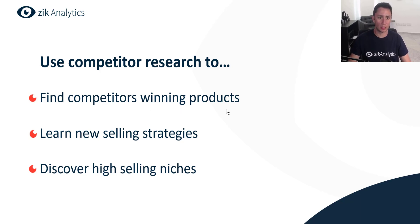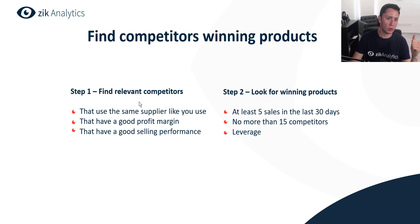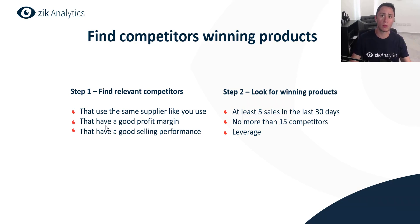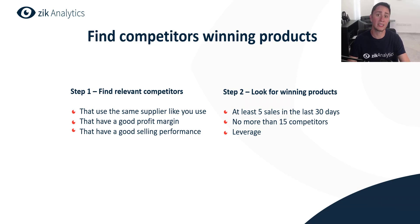Let's start with the first one — find competitors' winning products. We break it down to two steps. First, find relevant competitors. You want to find competitors that use the same supplier as you, make sure they work with a good profit margin so it's worth your research time, and find competitors with a good selling performance — high sell rate, high sales, more sales than active listings.